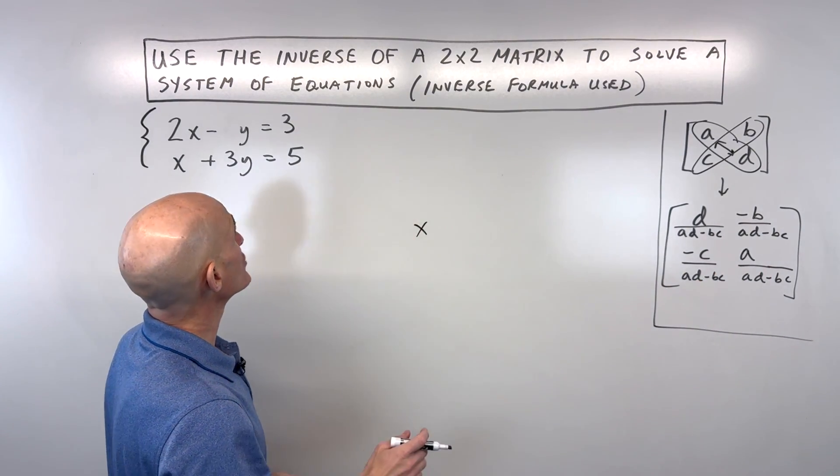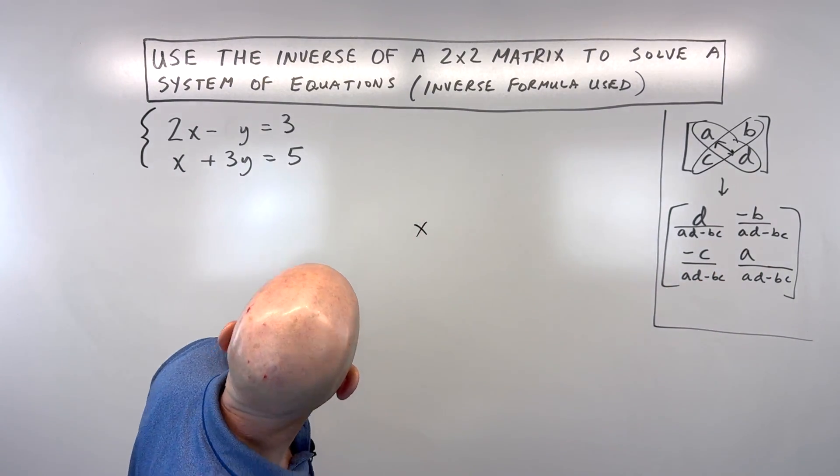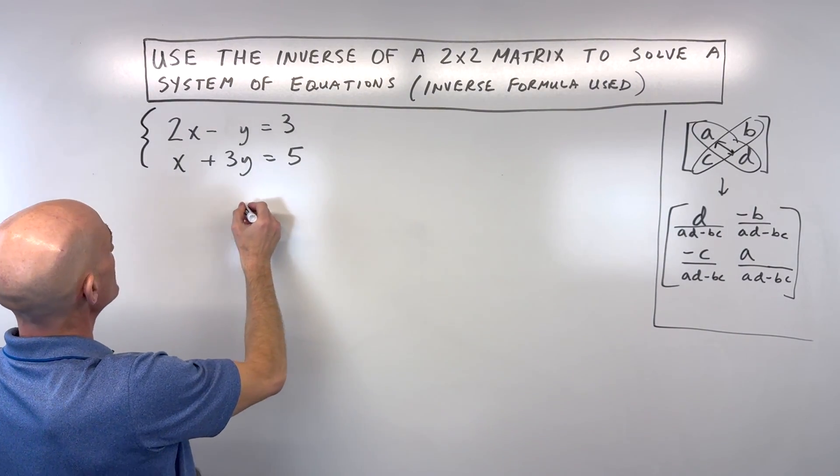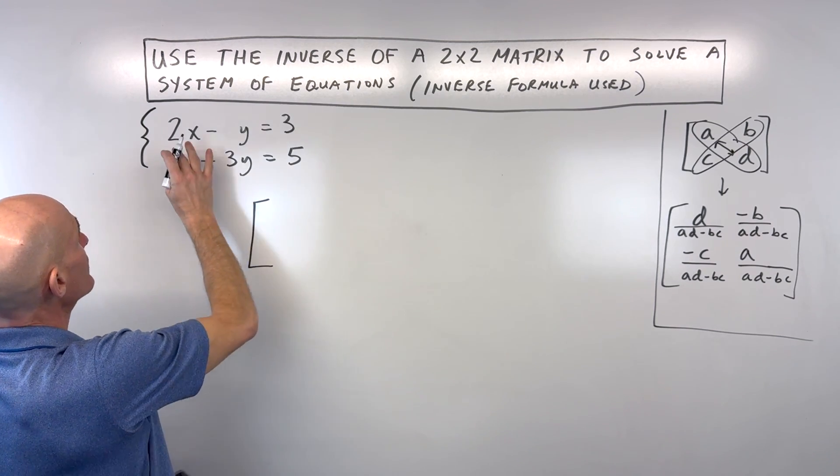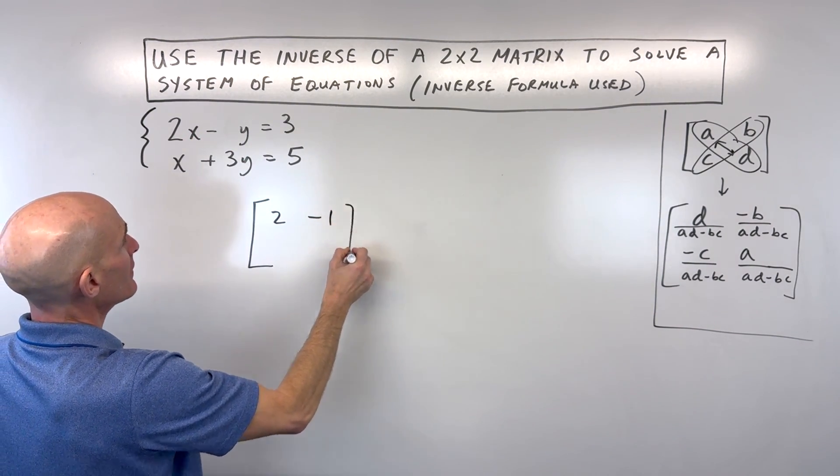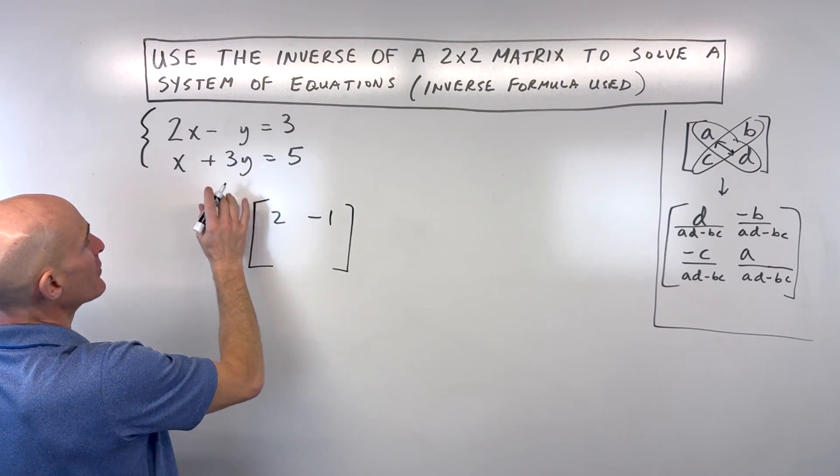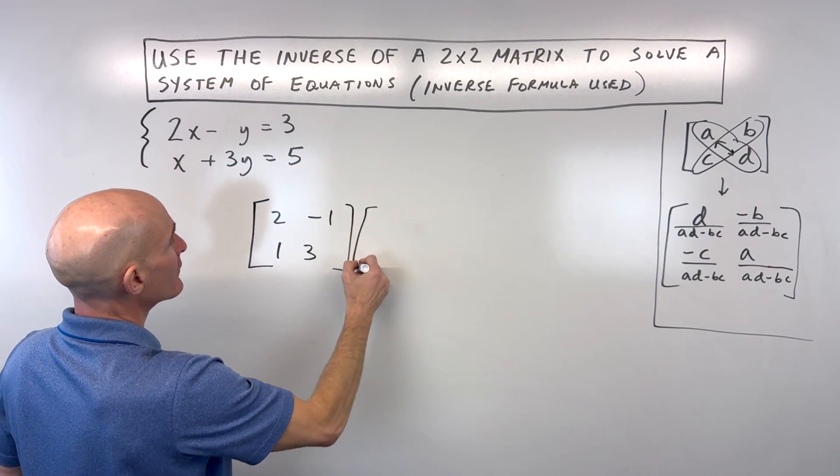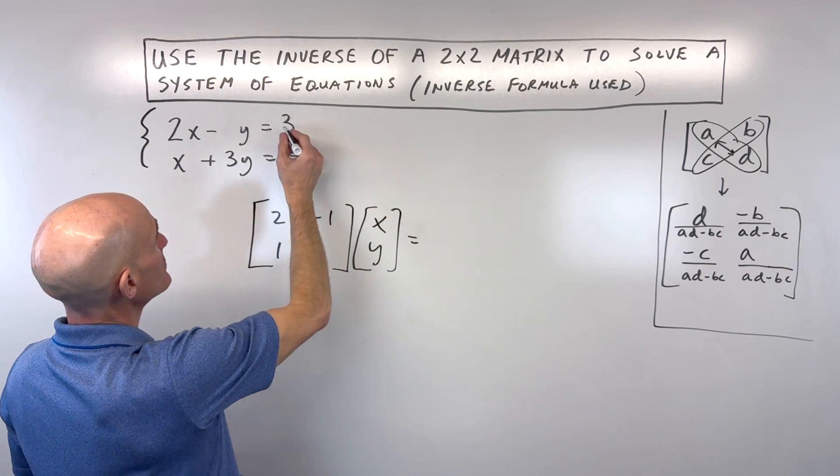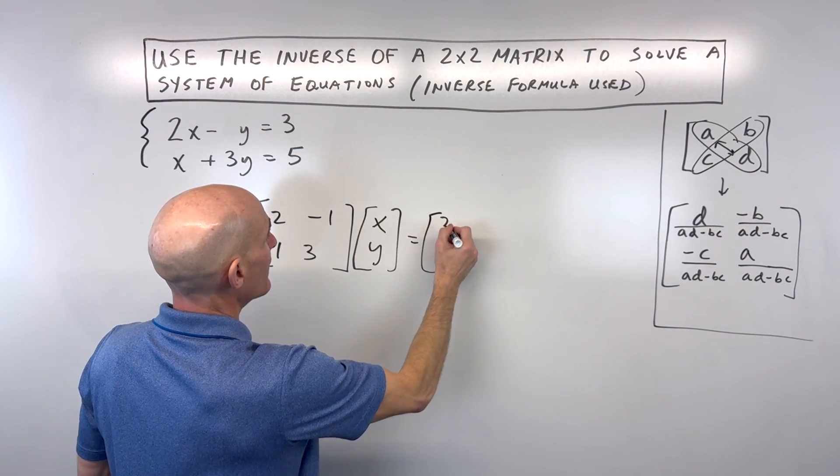So what we're going to want to do here is we're going to want to set this up as a matrix equation. So the way we would do that is we would say the coefficients are 2, negative 1, and this one's 1 and 3, and then we have our variable matrix, which is x and y, and then we have our solution matrix, which is 3 and 5.